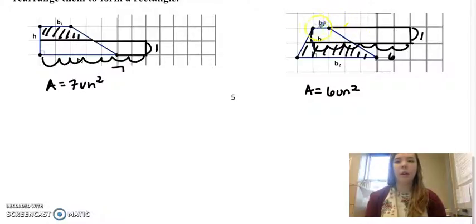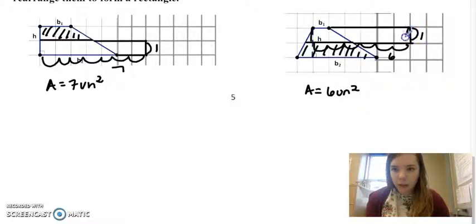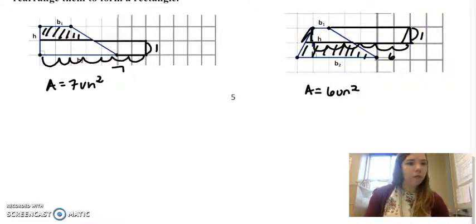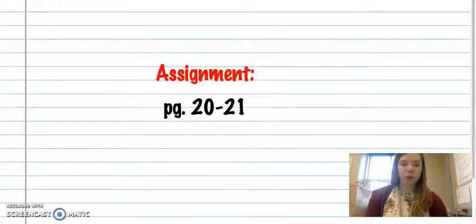All right. And if I had moved this piece down, it would have been the same idea. This is actually technically a little bit like this because this one's a little bit diagonal also. But if you shear them, you get a rectangle. All right. Your assignment for today are pages 20 and 21. Let me know if you have any questions.